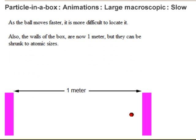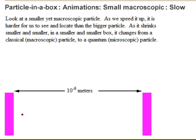A large classical ball, no matter how fast it moves, can always have its position and momentum well defined. Although a small classical particle in a box is hard to locate with our eyes when it moves fast, we can build equipment to locate it and also know its momentum because the particle is classical.